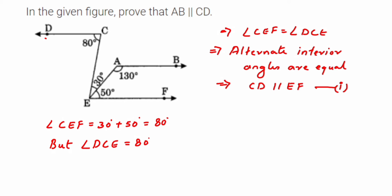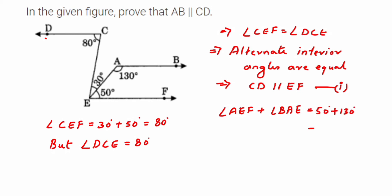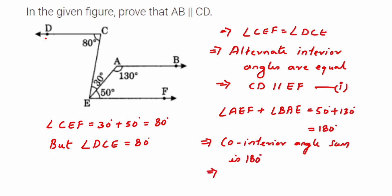In the figure, they have not given which is parallel and which is transversal. We're just adding up the angles and using our properties to show that this is a transversal and these are the parallel lines. So angle AEF plus angle BAE is equal to 50 degree plus 130 degree, which is equal to 180 degree. This implies that the co-interior angle sum is 180 degree, which implies that these two lines are parallel.